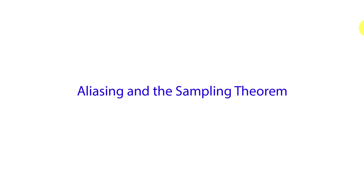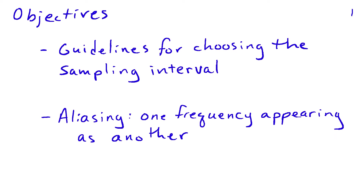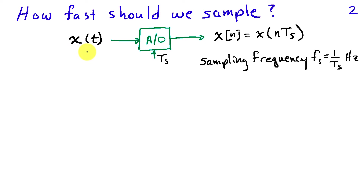Sampling a signal involves discarding all of the information in that signal that's in between the samples, and this has several important consequences. We're going to look at some of those in this video and obtain some guidelines for choosing the interval between samples, and also discover the phenomenon of aliasing. We're taking a continuous time signal and using an analog to digital converter to sample that signal at intervals of T_s, obtaining a discrete time signal evaluated at integer multiples of the sampling interval.